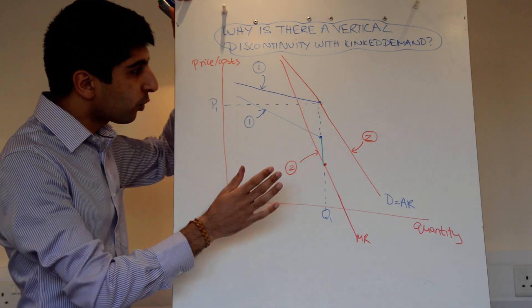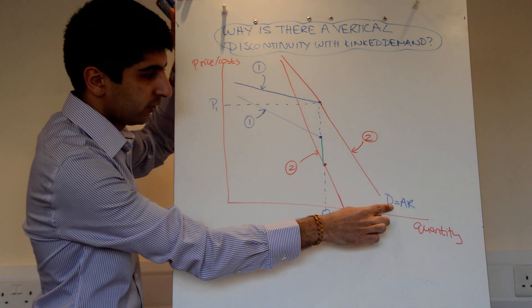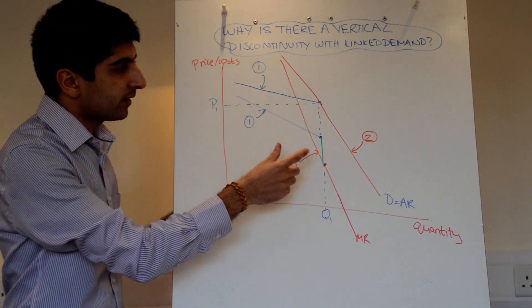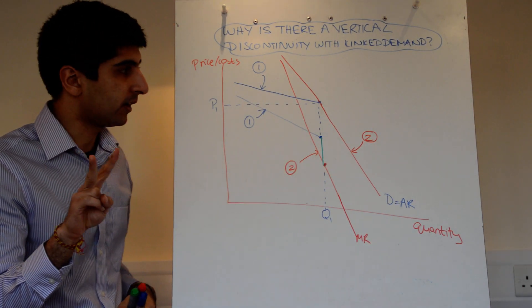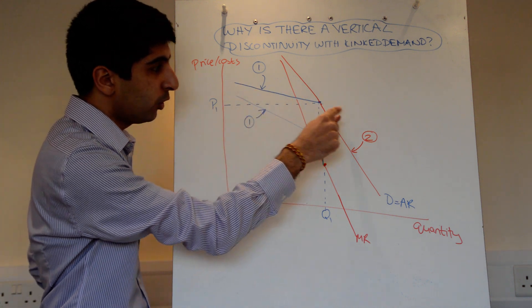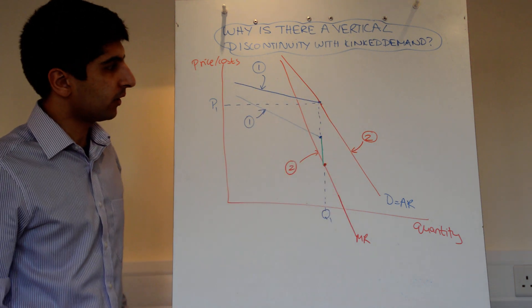So what's going on here? Well, I've drawn the kinked demand curve, which is just down here, and we know from the last video that that takes into account two demand curves. You've got one demand curve in blue, and you've got one demand curve in red.